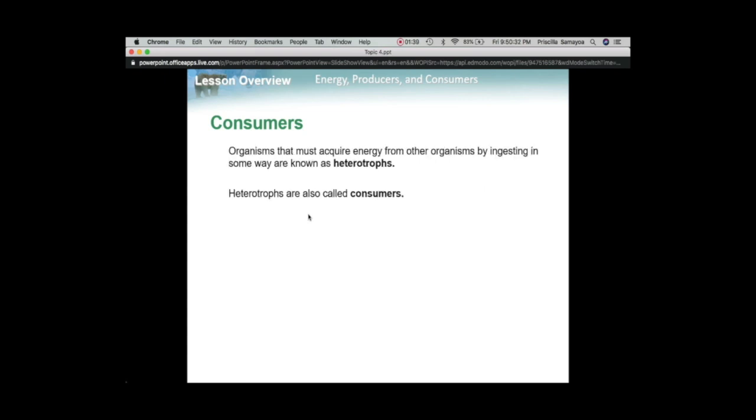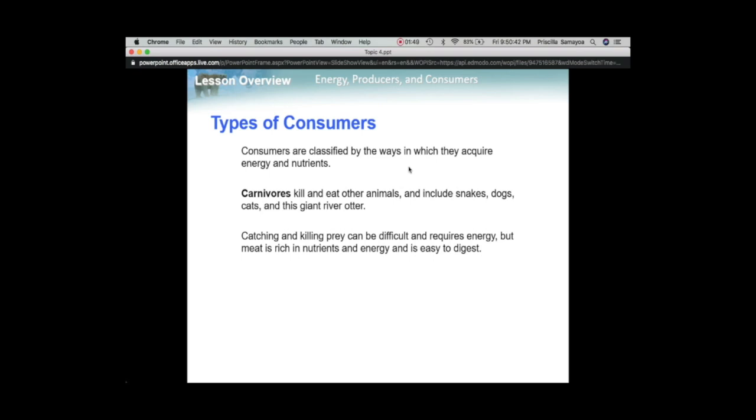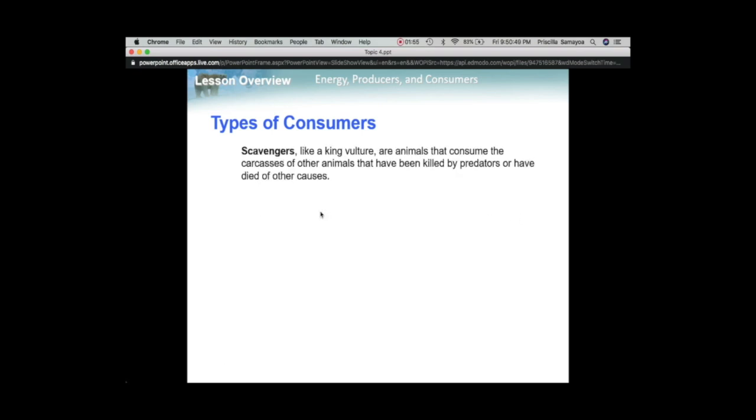So consumers, we're on the second level now. These are heterotrophs. They do not make their own food. They eat the ones that either make their own food or each other. So in most cases, it's going to be animals like snakes, dogs, otters, whatever.